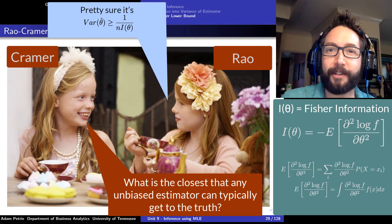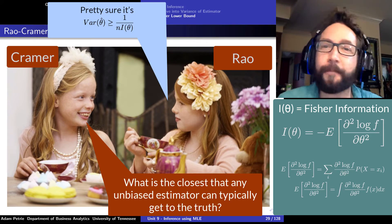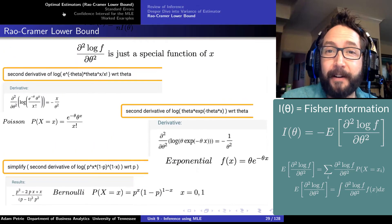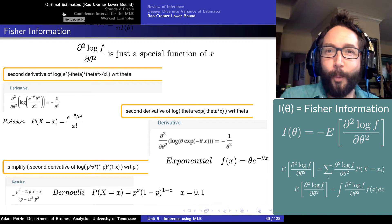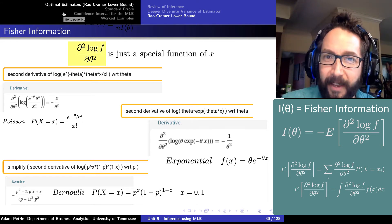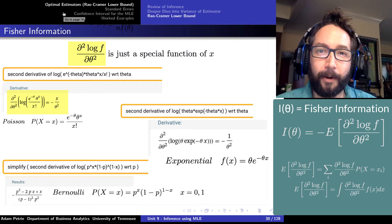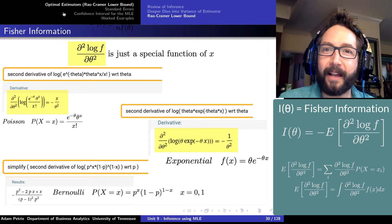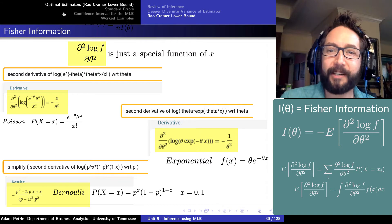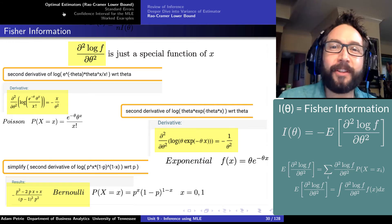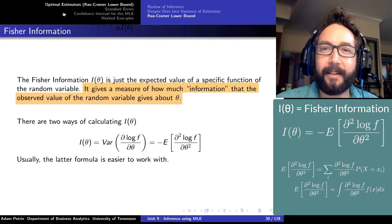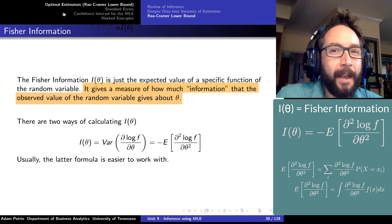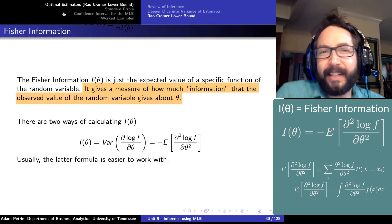To evaluate that expression, we need to know what the Fisher information is. The Fisher information is just the expected value of a very special function of x. Specifically, if we take the second derivative with respect to theta of the logarithm of the formula for our probability distribution, that expected value — once we flip the sign — is defined as the Fisher information of the probability distribution. From an information theory perspective, it measures how much information a particular value of the data contains about the unknown parameter theta.